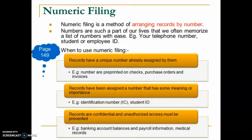There are three different situations when you will use Numeric Filing. The first situation is when your company needs to keep records that have a unique number assigned to them — for example, numbers pre-printed on checks, purchase orders, and invoices. A check already has a pre-printed number, and a receipt book has its own serial number on every page. That is what we call a pre-printed number, and you arrange records according to that number.